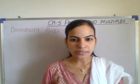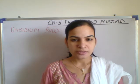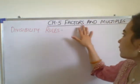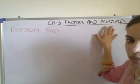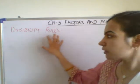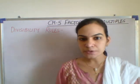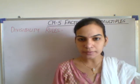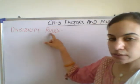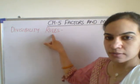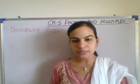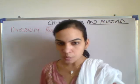Good morning students. Welcome to our maths class. Today we will be continuing the last topic of chapter number 5, that is factors and multiples. Today I will be discussing divisibility rules. One natural number is said to be divisible by another number if the remainder comes to 0. We will be learning certain rules that make it easier to find out whether a given number is divisible or not.